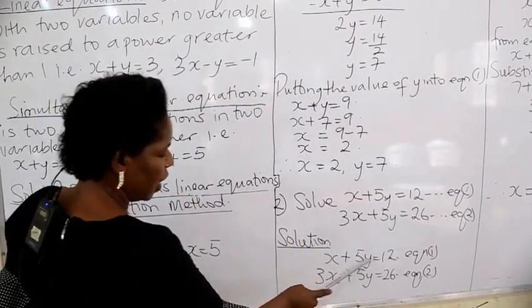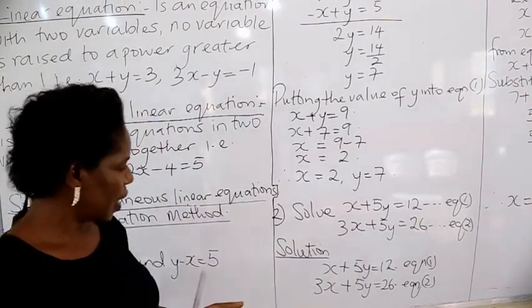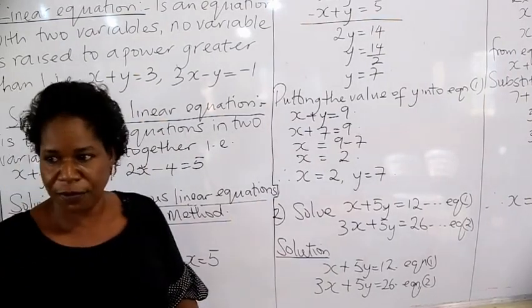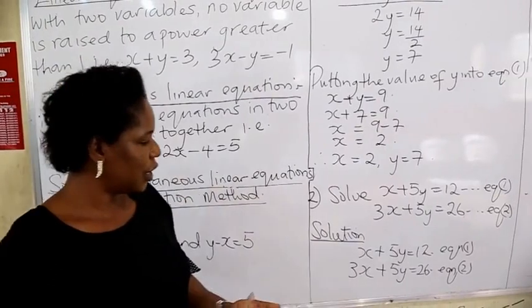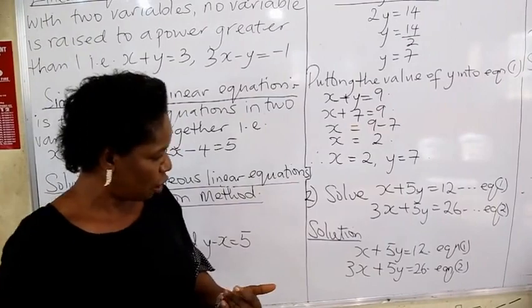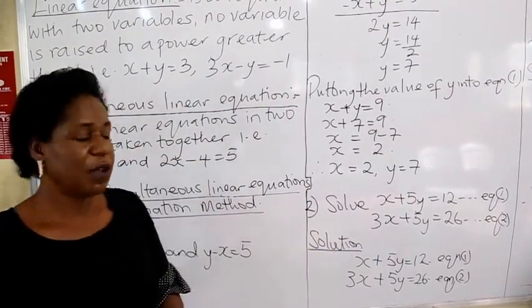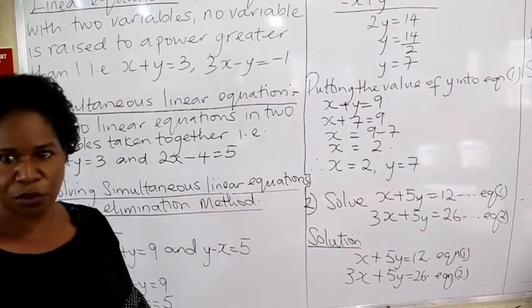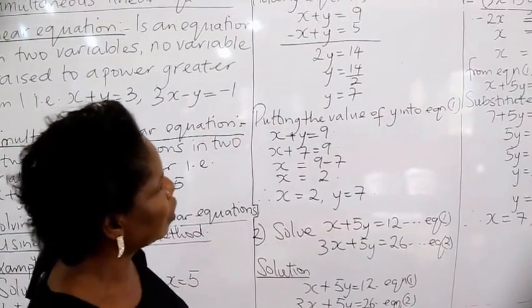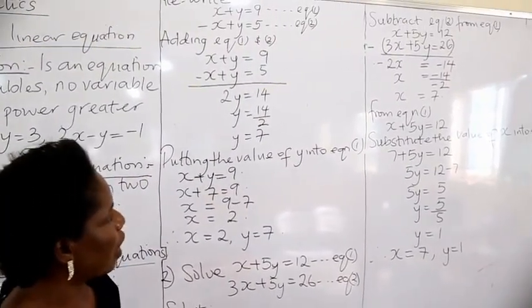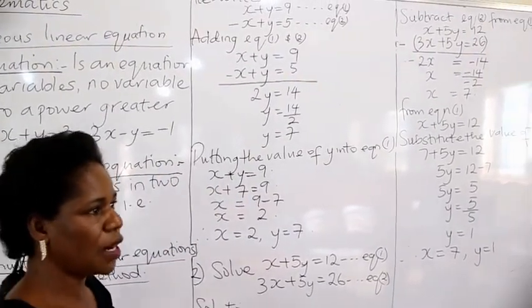Now let us look at the numerical coefficient of y in equation 1 and 2. The numerical coefficient of y in equation 1 is 5, and in equation 2 it is also 5. The two numerical values are the same. The numerical values must be the same before you can apply the elimination method. Since the two signs are also the same, we are going to subtract in order to eliminate variable y. Equation 1 is x plus 5y equals 12, and equation 2 is 3x plus 5y equals 26.